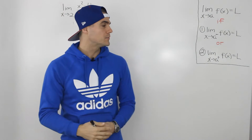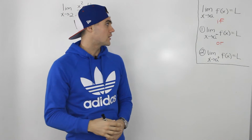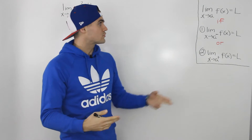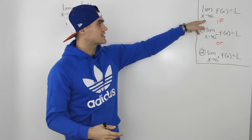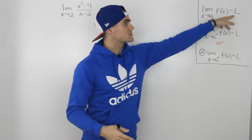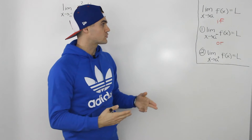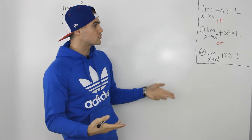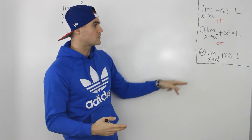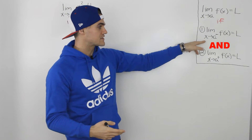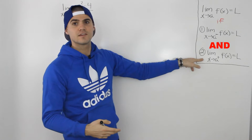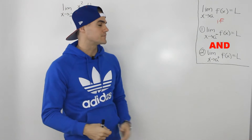If you remember from our limit overview video, to prove that a limit exists and equals a certain value, we have to prove that it approaches that same value from both the left side and the right side.